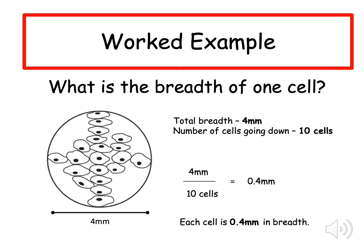So let's do this again. The total breadth is the exact same as the total length. It's four millimeters. It gives you that in the diagram. The number of cells going down is 10 cells. So four millimeters divided by 10 cells gives you 0.4 millimeters.